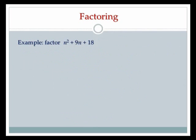Let's factor n squared plus 9n plus 18. We're going to use slide and divide because there are three terms in this polynomial.